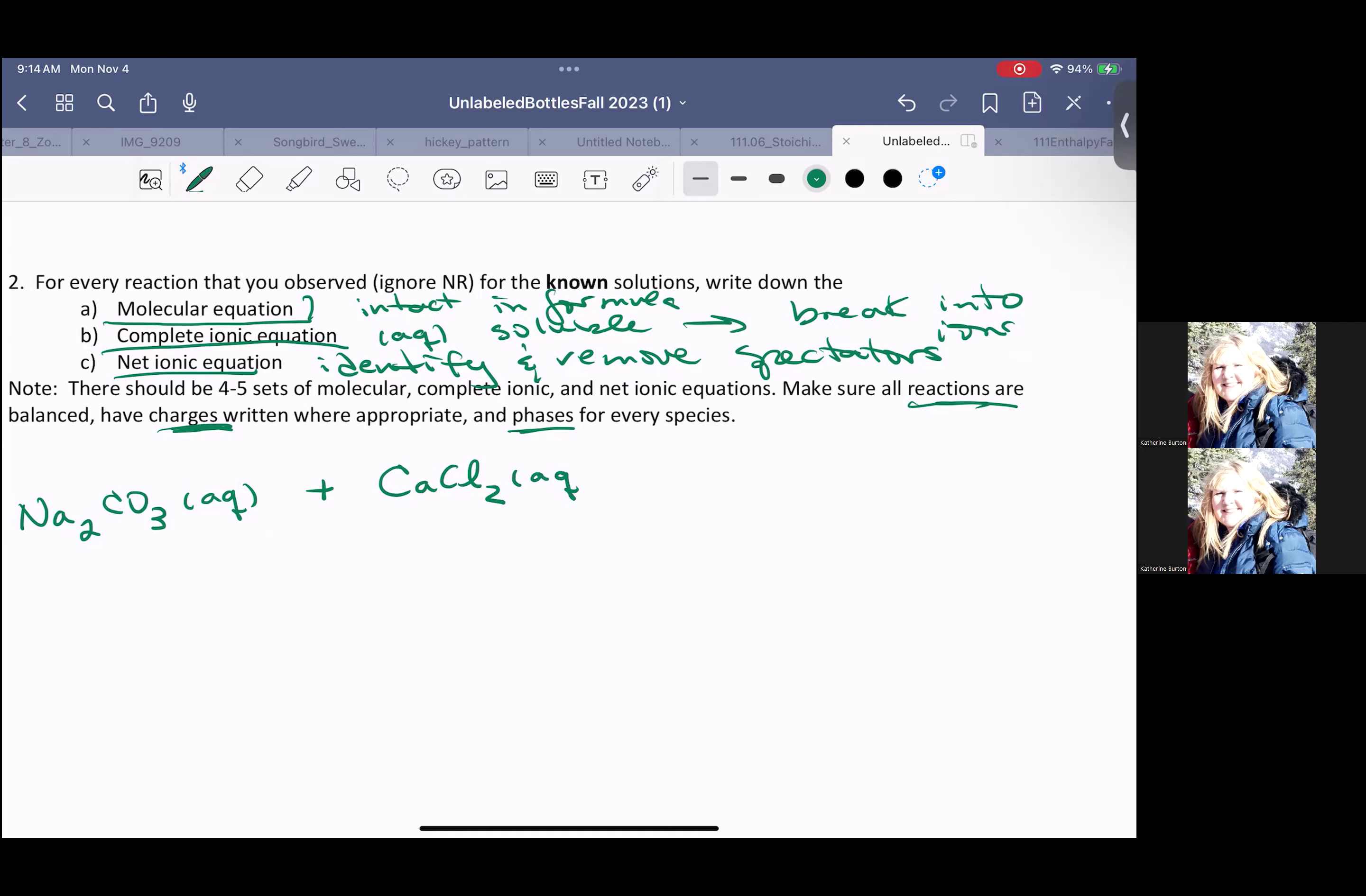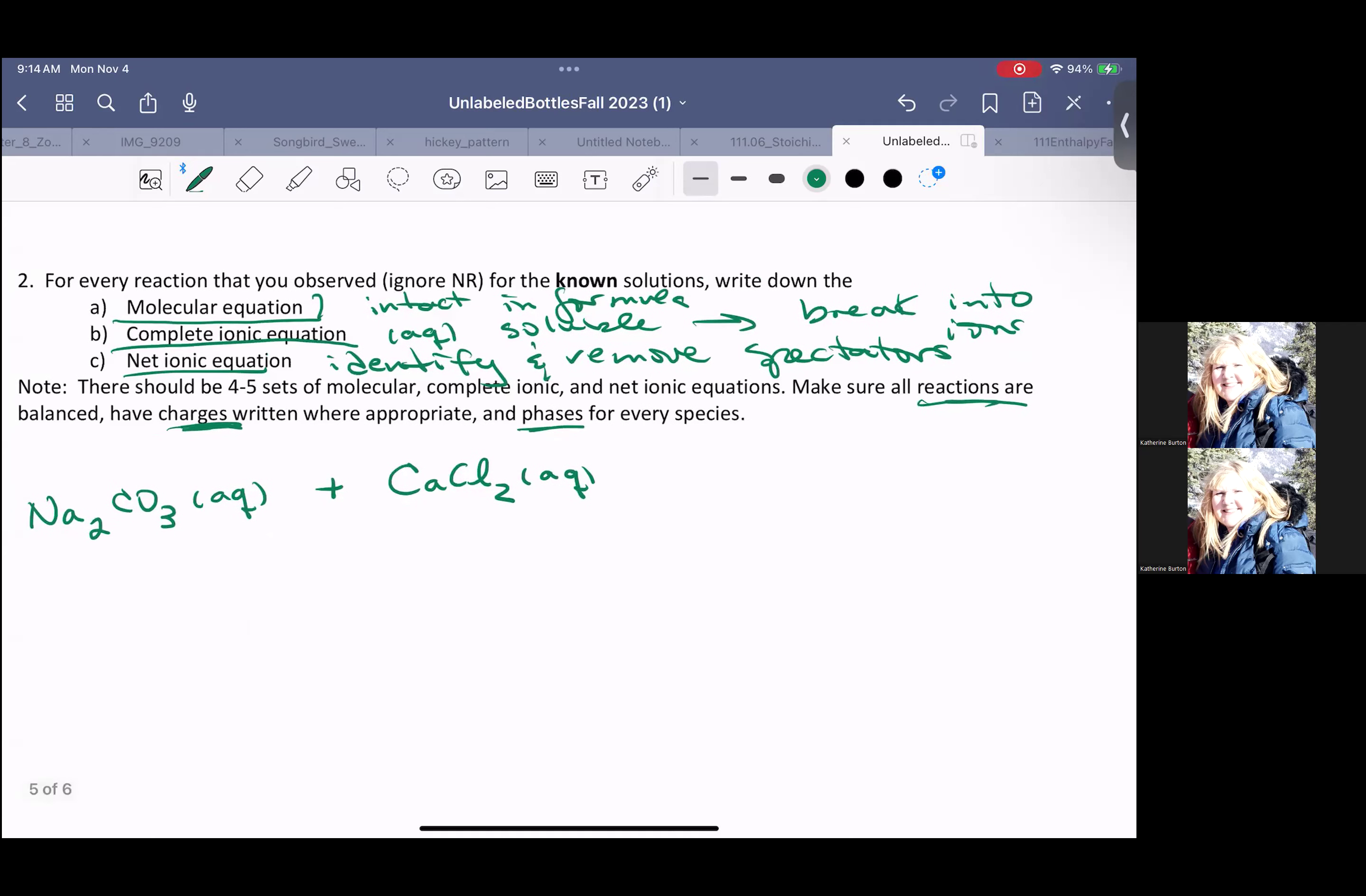Chlorides are mostly soluble. Calcium is not one of our insoluble exceptions. Remember, these are our solubility rules. These are all going to be double replacement reactions, which means we're just going to swap what's attached to what.